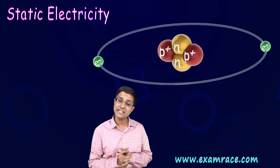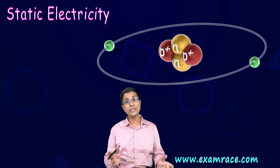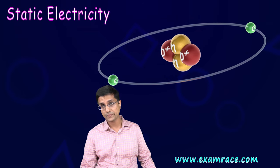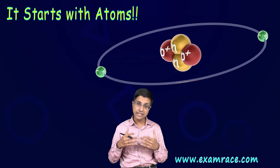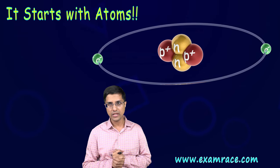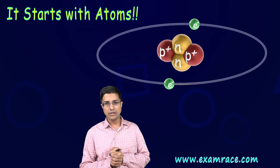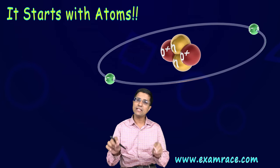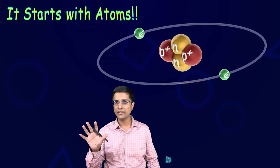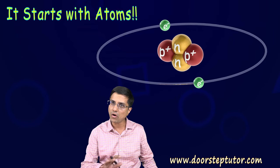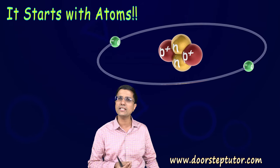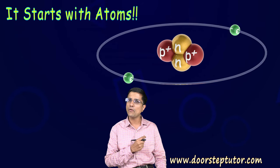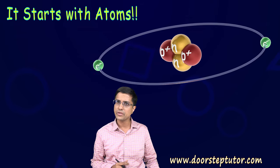What is static electricity? It is electricity which is not really moving. Let's understand how it is produced. We'll go back to a very basic thing — something which is there in all matter — and that is the atom. It is the most basic aspect of all the matter that we see around us.